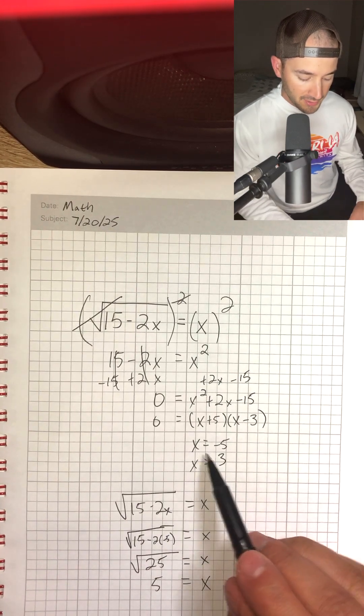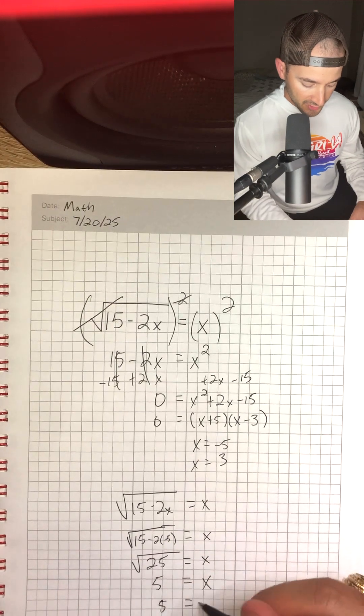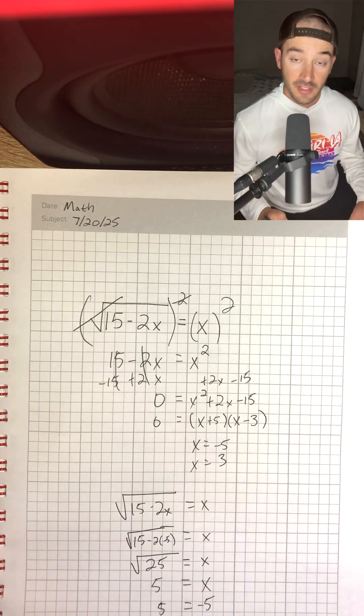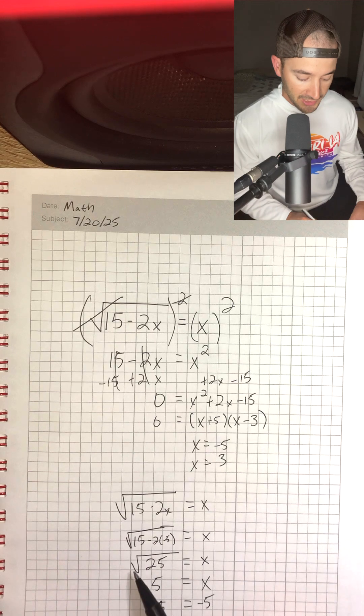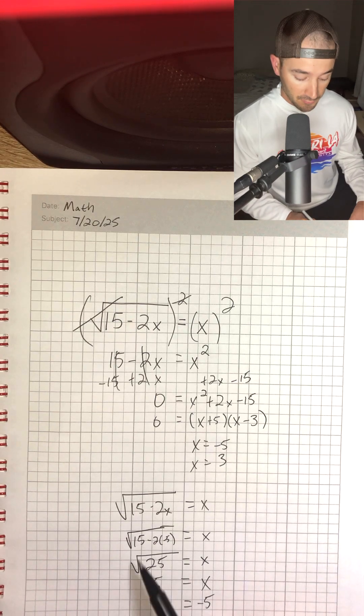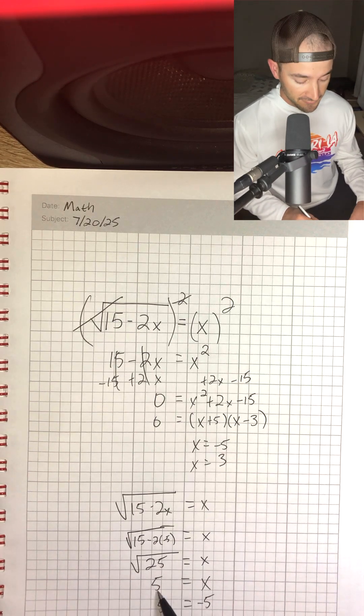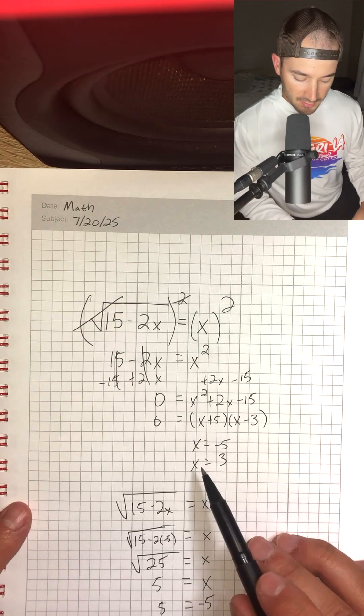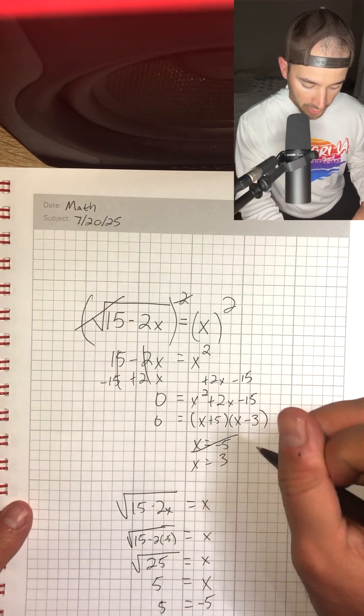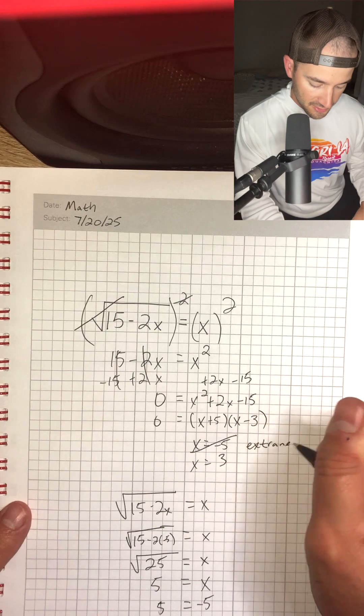Now remember, we're plugging in negative 5 for x. So is 5 equal to negative 5? No, it's not. Because we need the principal square root of 25, that's going to be positive 5, not negative 5. So x equals negative 5 does not work because that is an extraneous solution.